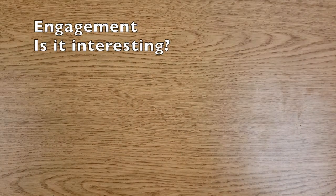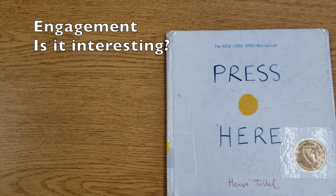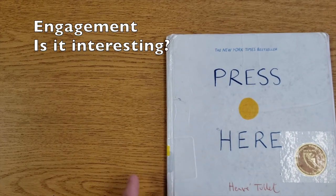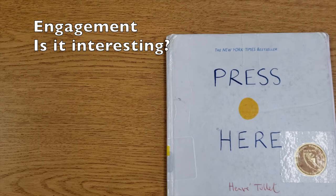Finally, the last criteria is engagement — the interest level. How interesting is this book for the intended audience? How engaging is it? If you read this book aloud to children, will it hold their attention? Be sure to rate the book for the intended audience, not necessarily yourself. You might say a book isn't your cup of tea because you're in fifth grade, but consider that it is written for much younger children.